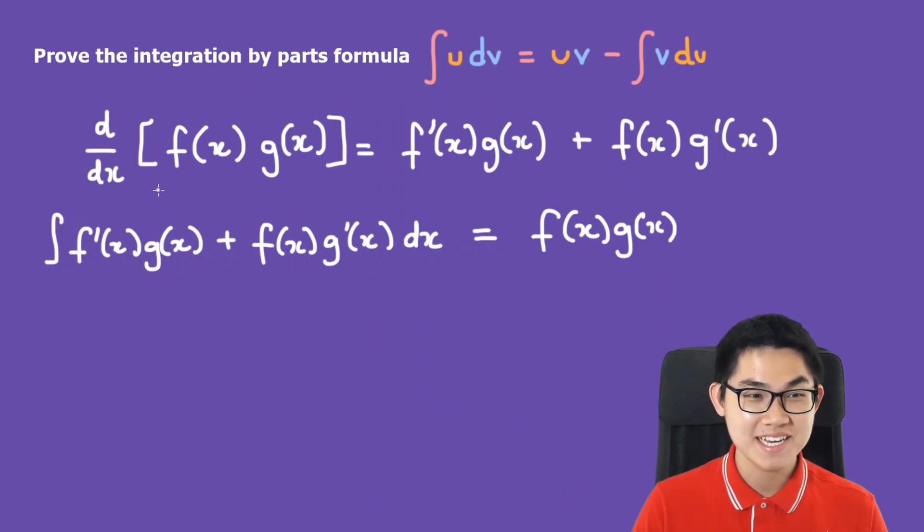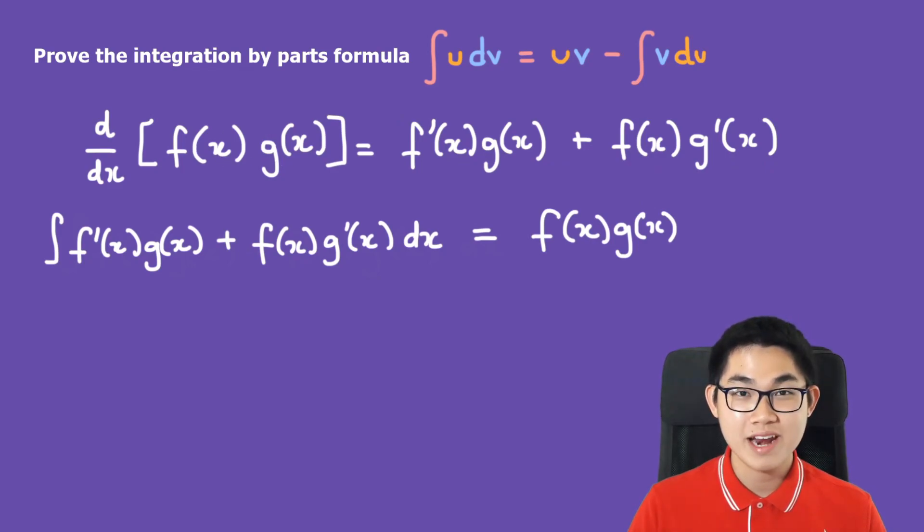This makes sense because the derivative of f(x)g(x) is going to be this group over here, so the integral of this is going to be f(x)g(x). You might say the integral of this is going to be this plus C, but in order for our proof to work we're going to say that C is equal to zero.